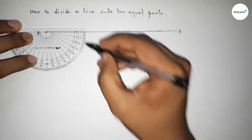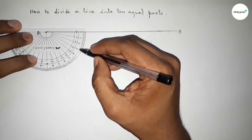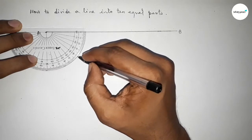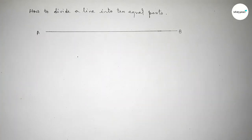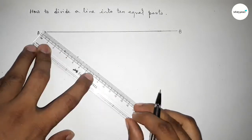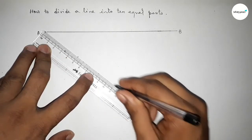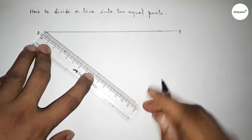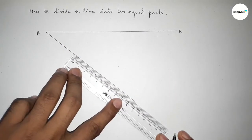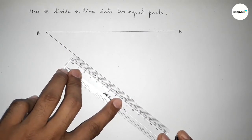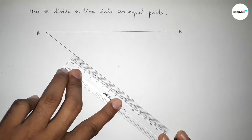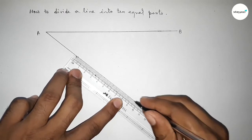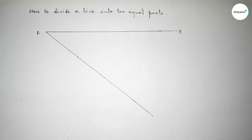Next we have to draw an accurate angle at point A. So putting the protractor and taking an angle of 40 degrees — you can also take 30 or 50 degrees. Now joining this line.